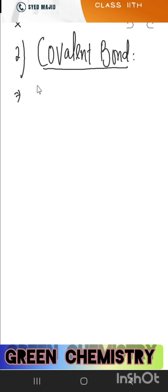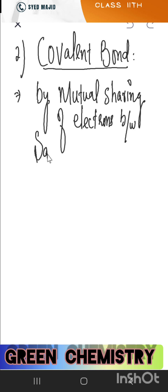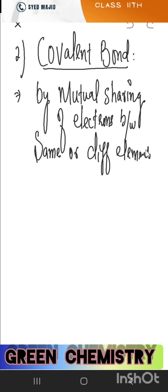This bond forms by mutual sharing of electrons. Between same or different elements — sometimes questions come statement-wise on this point. Covalent bond is defined as the mutual sharing of electrons between same or different elements.